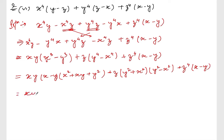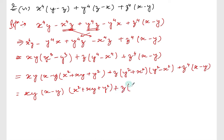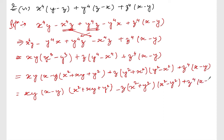Still, xy times (x minus y) times (x square plus xy plus y square), plus z. I can write this as plus z times (x square plus y square). But y square minus x square — if I take minus out, it becomes minus(x square minus y square), plus z to the power 4 times (x minus y).